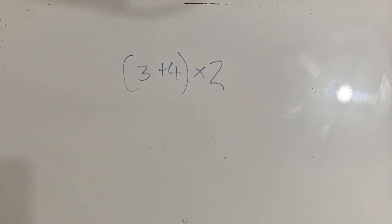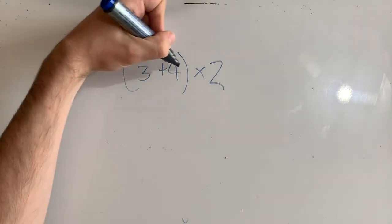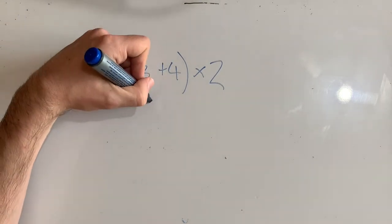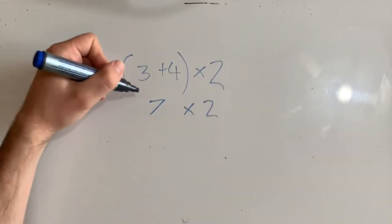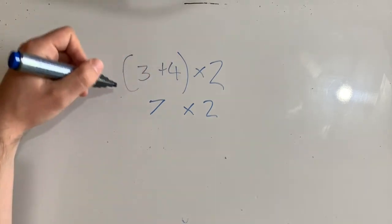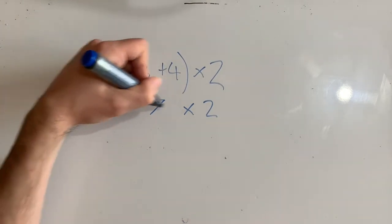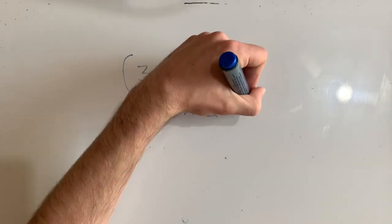Whenever I have a problem that has multiple steps, I like to work down my page. So I've got 3 plus 4, that is 7. And then we're still multiplying that by 2, because we haven't done anything with this. I've actually gotten rid of the brackets by doing that. I don't need them anymore. And 7 times 2 is, of course, 14.